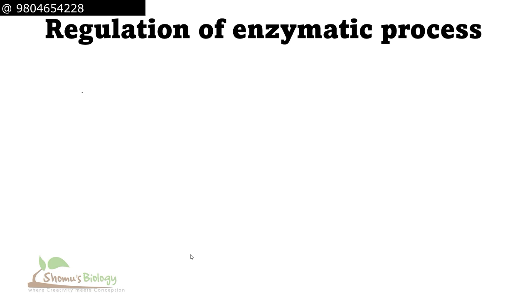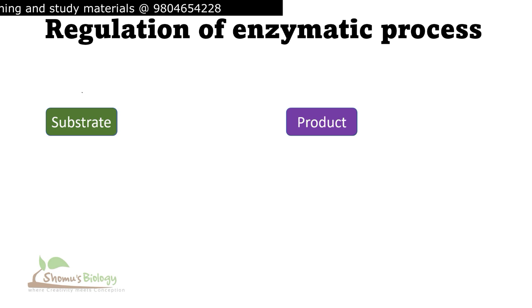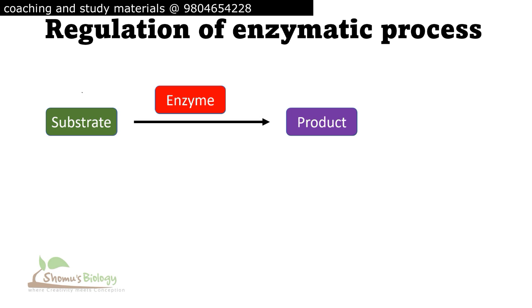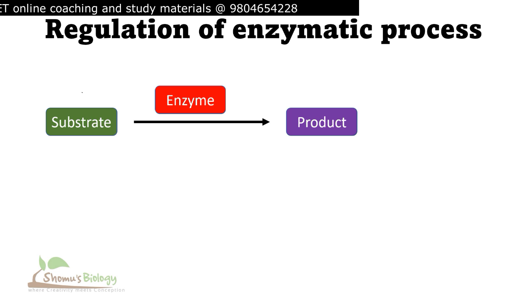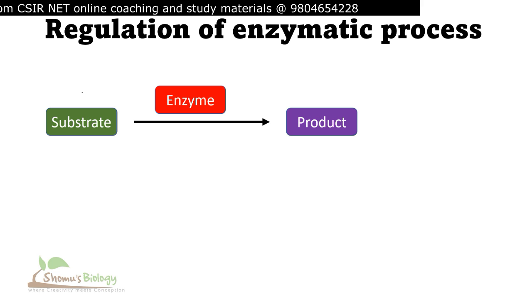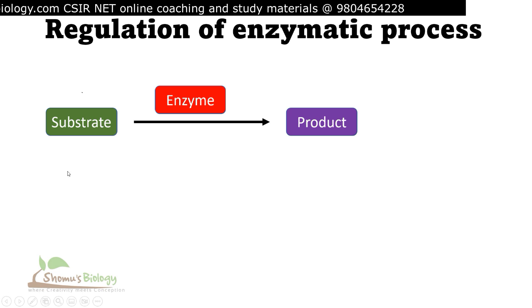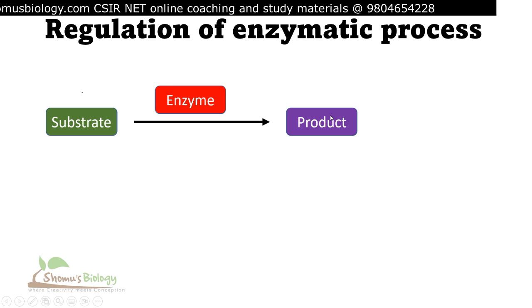Whether you take glycolysis, gluconeogenesis, TCA cycle or Krebs cycle, in all these cases the process works very similarly — starting with a substrate, and the substrate is converted to the product by the activity of some enzyme. This enzymatic reaction can be regulated by three different processes: by the substrate concentration, by product concentration, and by the presence of an allosteric regulator.